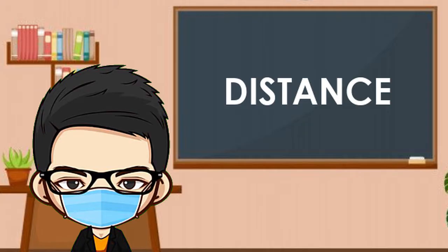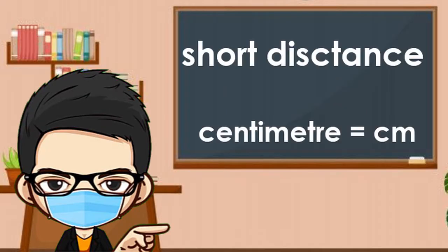To measure the length of the table, we need to measure the distance traveled by the object. Short distance can be measured in centimeters, with the symbol CM.